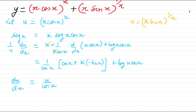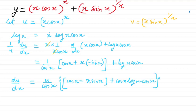After that you can put the value of u. I've taken cos x outside, so here I will get plus cos x into log(x·cos x). So this is the differentiation of the first part.